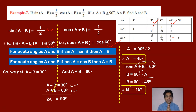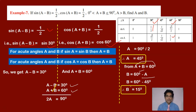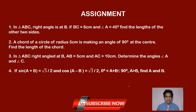You have to remember all the trigonometric ratios: sin, cos, tan, cosecant, secant, and cot for 0 degrees, 30 degrees, 45, 60 and 90 degrees. These five angles give 6 trigonometric ratios each. This is your assignment for today — I have given four problems. Solve these problems and post answers to me as early as possible. Thank you.